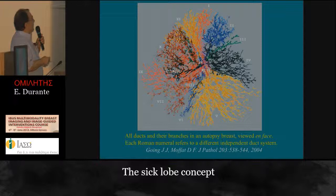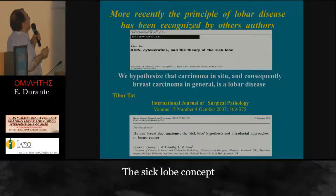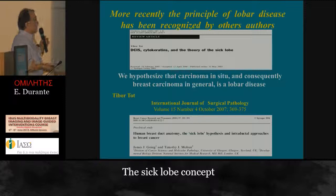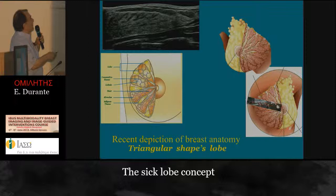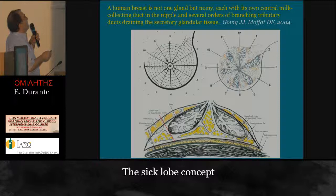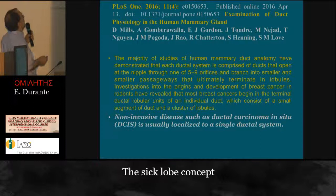All ducts and their branches in an autopsy breast — each Roman numeral referring to a different independent ductal system — is a paper published around 2004. More recently, a clear hypothesis of the sick lobe has been made by Tibor Toth, who published many papers and also a book. The new normal representation of breast anatomy is the lobe — each lobe has an independent duct and peripheral ductal-lobular units inside. A human breast is not one gland but many, each with its own central milk-collecting ducts in the nipple and several orders of branching tributary ducts draining the secretory glandular tissue — a representation by Going and Moffat in 2004.